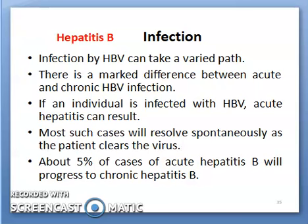Infection by HBV can take a varied path. There is a marked difference between acute and chronic HBV infection. If an individual is infected with HBV, acute hepatitis can result. Most such cases will resolve spontaneously as the patient clears the virus. About 5% of cases of acute hepatitis B will progress to chronic hepatitis B.